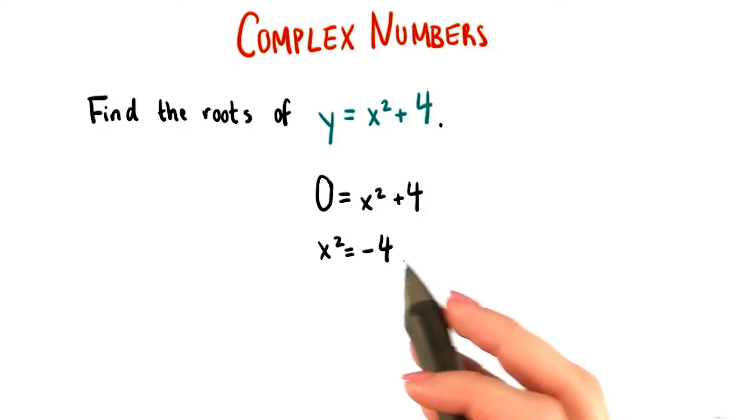We can already recognize at this point that x is going to need to be an imaginary number. Otherwise, when we squared it, we wouldn't end up with a negative.